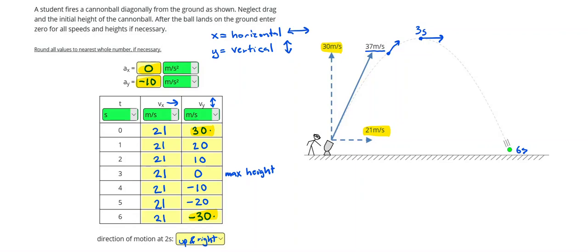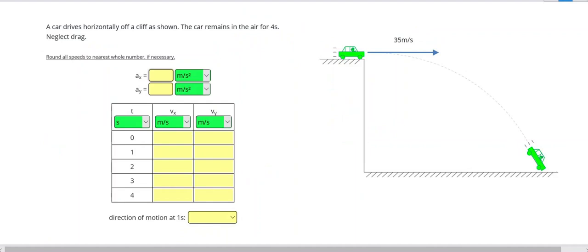Remember, we are rounding to the nearest whole number. We're also defining our positive directions as up and to the right. All right. Let's go ahead and take a look at our next problem. Once again, we are defining our positive directions as up and to the right.